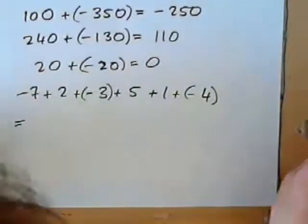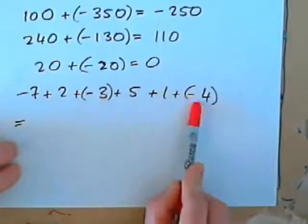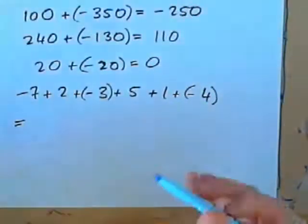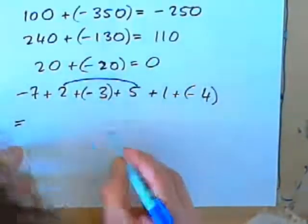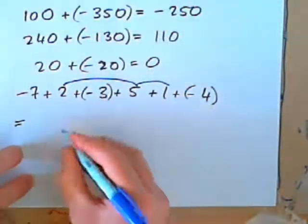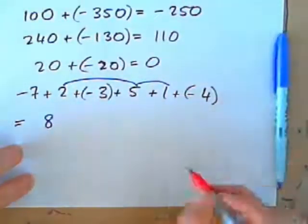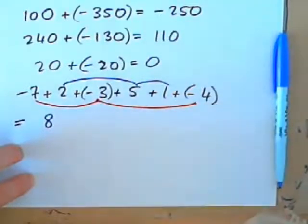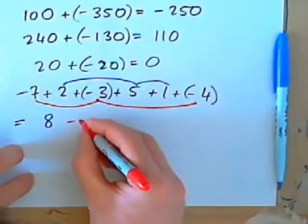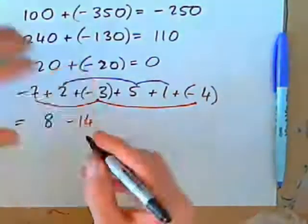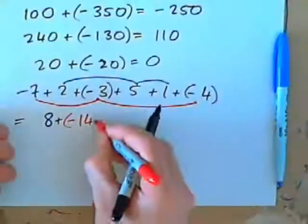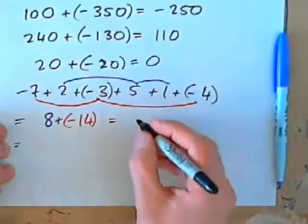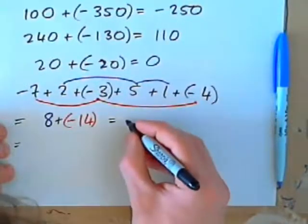Well, one way of doing this is to put the negatives together, then put the positives together, and then get the answer. So, what we could do is say, let's start with the positives. 2 and 5 is 7. 7 and 1, 8. So, that's positive 8. Then put the negatives together. Negative 7, negative 3, negative 10. So, you have 8 plus a negative 14. 8 positives and 14 negatives. And that makes negative 6, right?